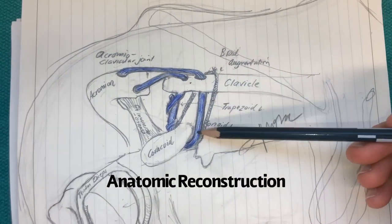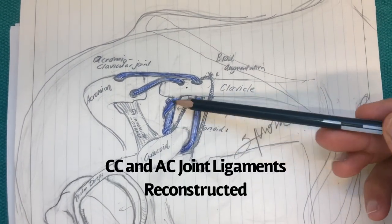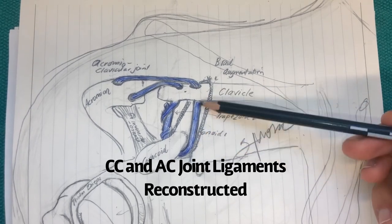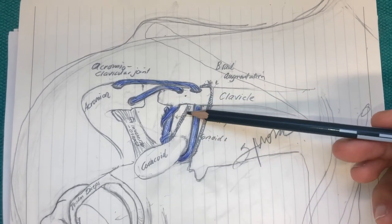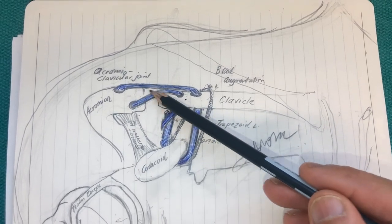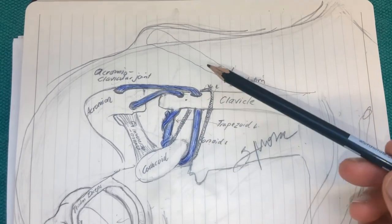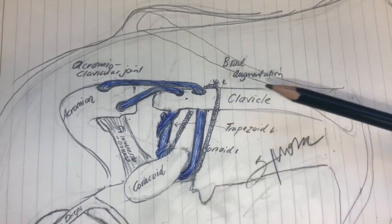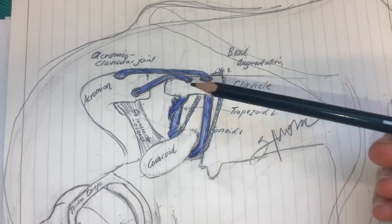Anatomic because I'm reconstructing these two ligaments and placing them in an anatomic location and also reconstructing the acromioclavicular joint ligament across the AC joint over here. Not only am I doing that, but I'm also placing a braid suture. How is it done? This is done like this.